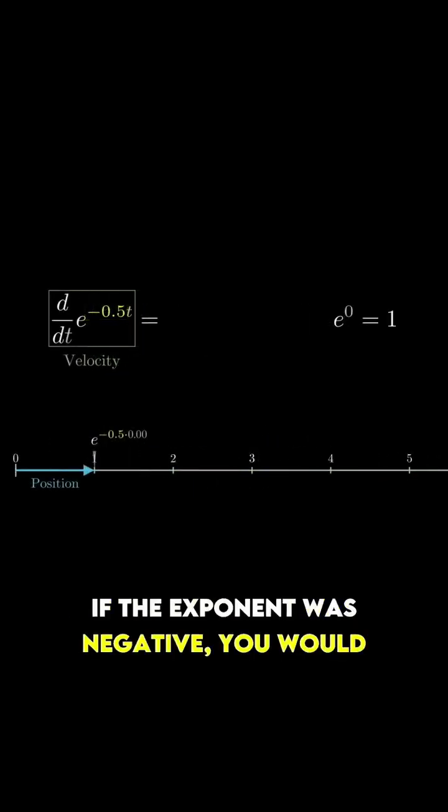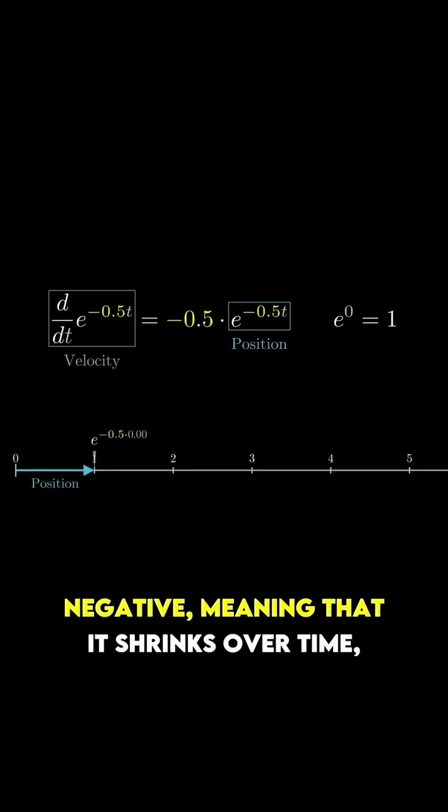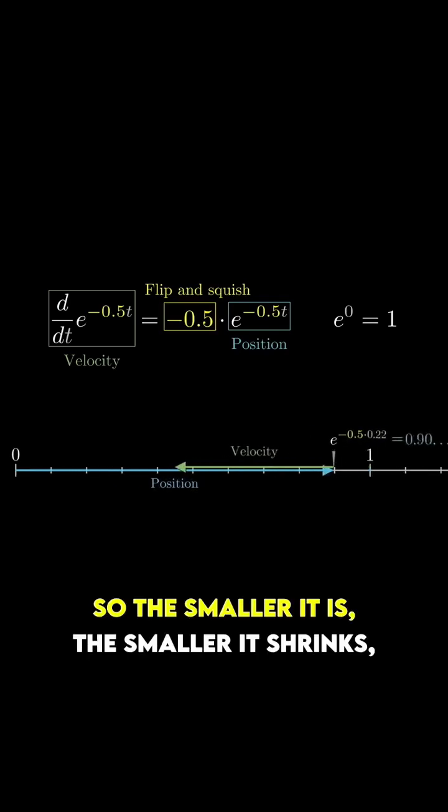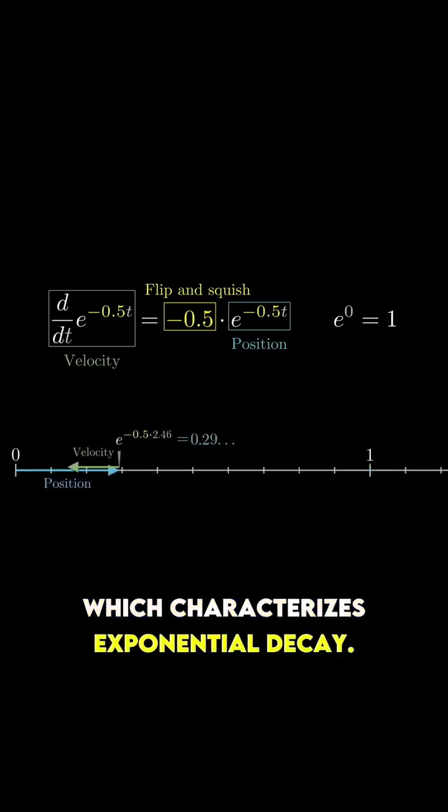If the exponent was negative, you would have something whose rate of change is negative, meaning that it shrinks over time. But the rate at which it shrinks is proportional to that position, so the smaller it is, the smaller it shrinks, which characterizes exponential decay.